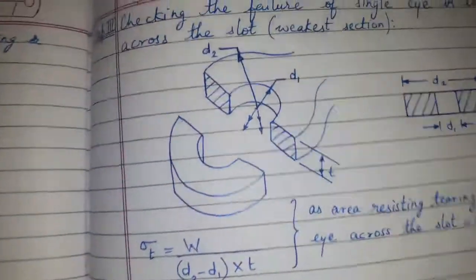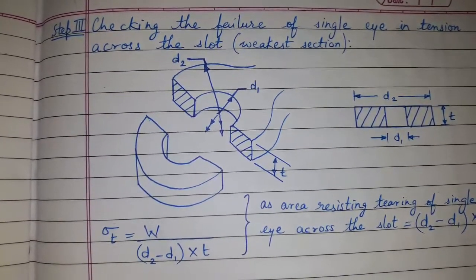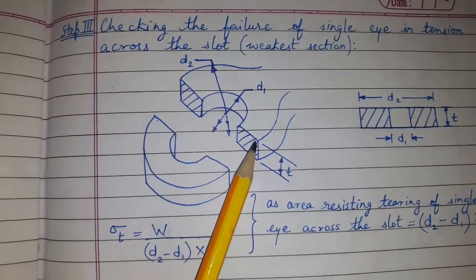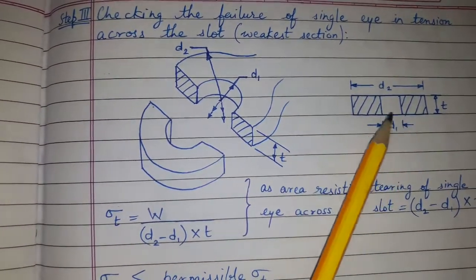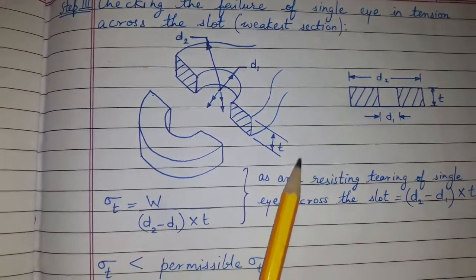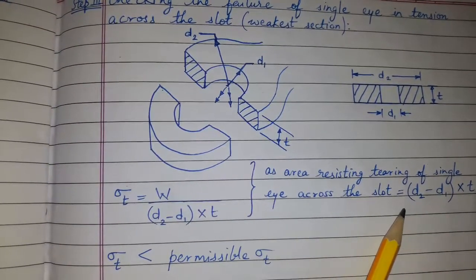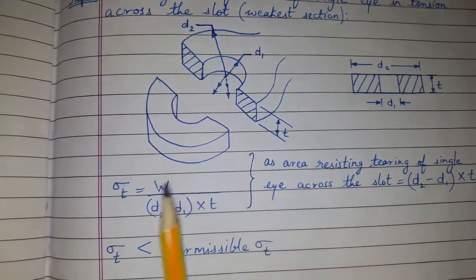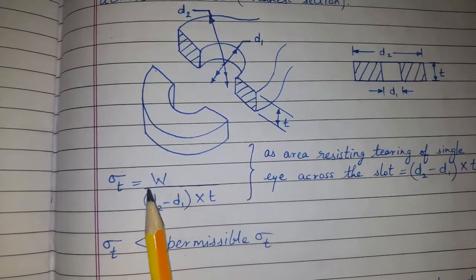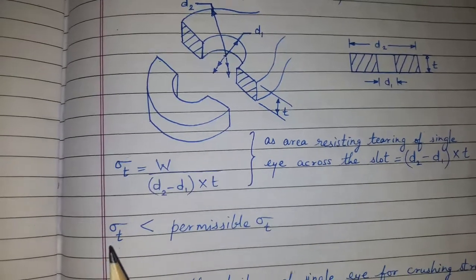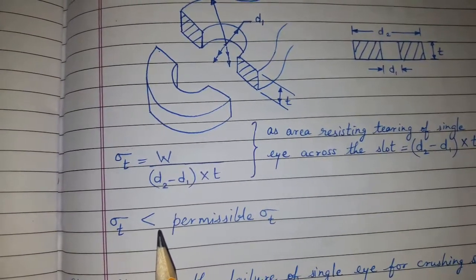Step 3: we will check the failure of the single eye in tension across the slot, which is the weakest section. We can calculate this area as (d2 − d1) × t. This is the resisting area which will resist the tearing. We find the tensile stress using this formula and check whether it is less than the permissible tensile stress.